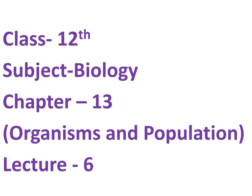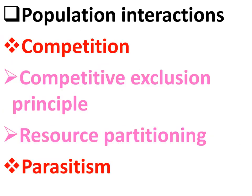Good morning students. This is 12th class biology, chapter 13 - Organisms and Population, lecture number 6. In the previous lecture we were discussing population interactions. Today we will continue that topic and discuss competition and parasitism. In competition, we will also study the competitive exclusion principle and resource partitioning.